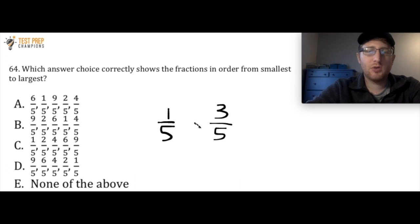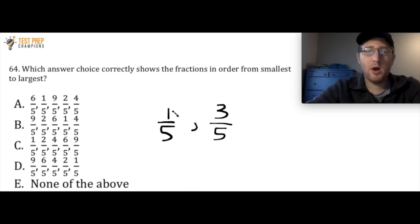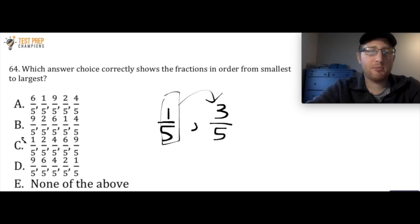Consider 1 over 5 versus 3 over 5. Note that they both have 5s in the denominator — the denominator is just the bottom number in the fraction. So if the denominators match, we can simply look at the numerators, and whichever number is bigger, that whole fraction will be bigger. For example, 1 over 5 — since 1 is smaller than 3, this first fraction is smaller than the second. So if we apply that process, we'll see that C is the correct answer.